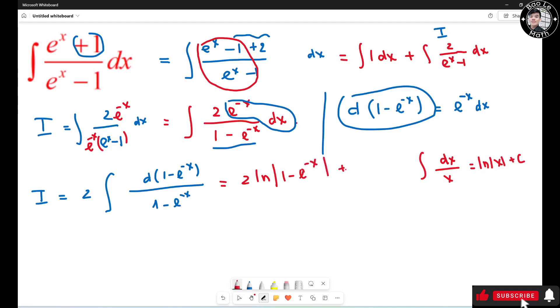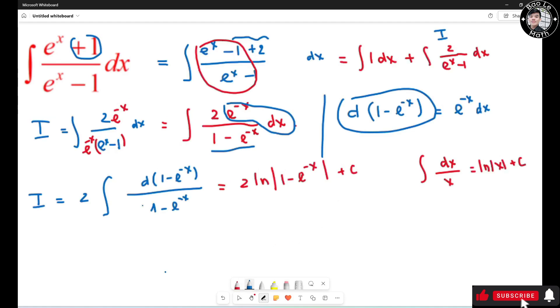So this becomes 2 times natural log of absolute value of 1 minus e to the negative x plus C.